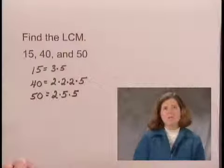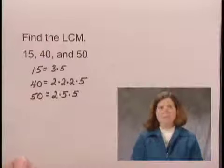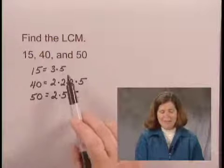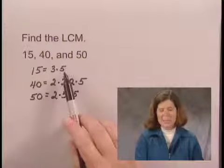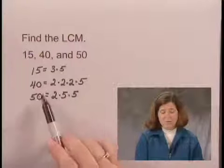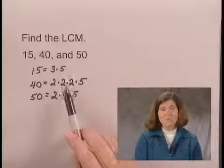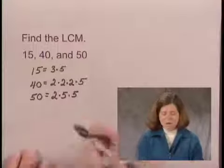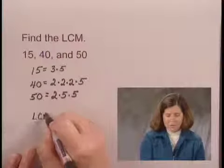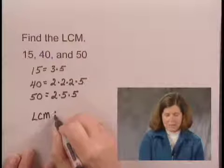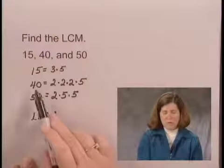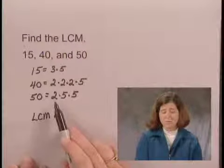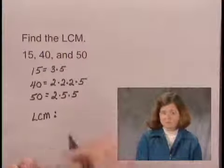Now we can use those prime factorizations to find the least common multiple. Any multiple of 15 has to contain factors of 3 and 5. Any multiple of 40 has to contain 3 factors of 2 and 1 factor of 5. So our least common multiple has to contain — for 40 it needs 3 factors of 2, and for 50 it needs 1 factor of 2. We don't need 4 factors of 2, we just need 3.